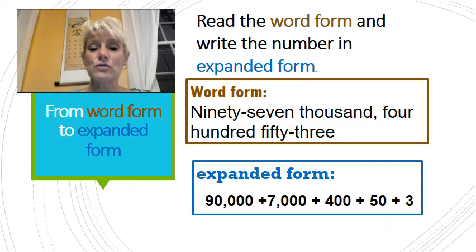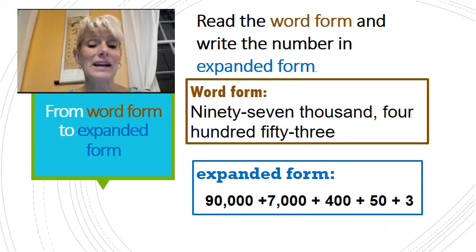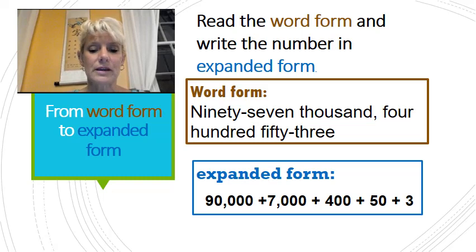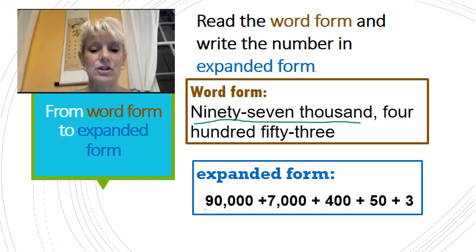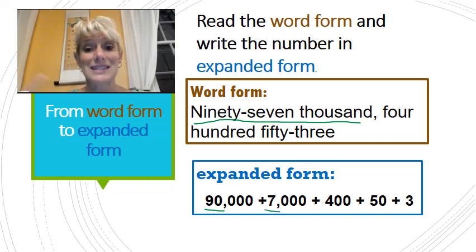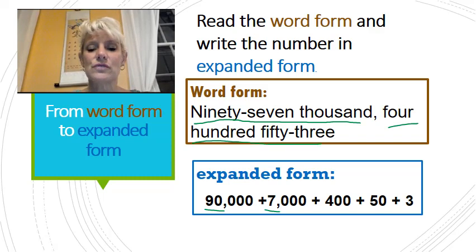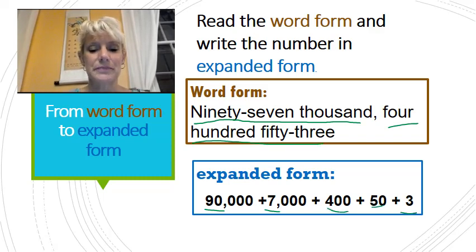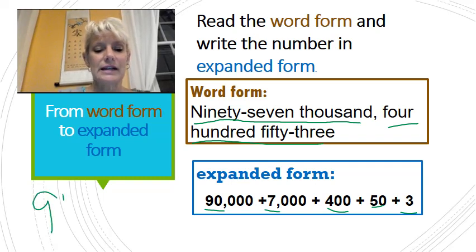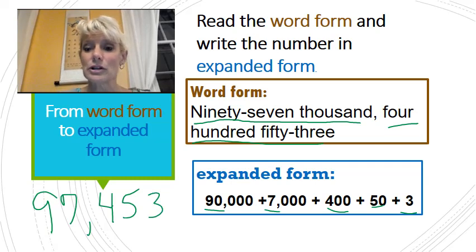Again, we have word form, but this time we're putting it back into expanded form. I have ninety-seven thousand — that's ninety thousand plus seven thousand, because that's ninety-seven thousand. Then we have four hundred fifty-three, so that's four hundred plus fifty plus three. So this would be ninety-seven thousand four hundred fifty-three.